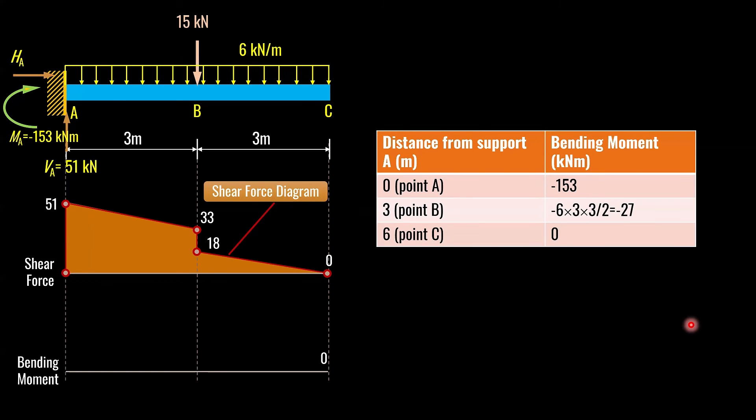This is the bending moment diagram. The first value is minus 153. Remember that negative moments are to be plotted on top side of the bending moment diagram. This is the tension side and compression is at the bottom. And we term these moments as hogging moments. And then you have a second moment minus 27 and then you have zero moment. This is a negative bending moment. This means that we have tension at the top and compression at the bottom. Normally, in case of a simply supported beam, we have compression at top and tension at the bottom.